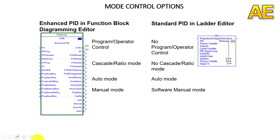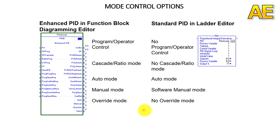These mode requests will only work if in the correct program or operator control state. For example, OperManual or ProgManual will only put the loop into manual if the loop is in program control or remote. The order of precedence from high to low is: manual, auto, then cascade or ratio.